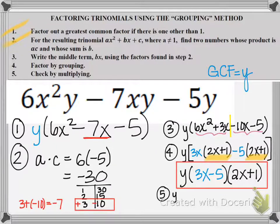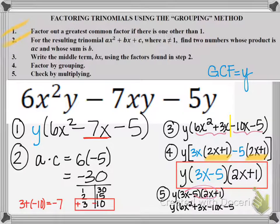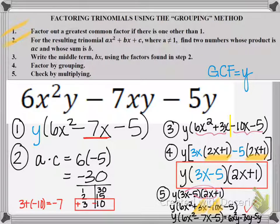But of course, we want to do the check. So when I check this, I'm going to first multiply the two binomials. So I'm going to leave y on the outside. And I'm going to get 6x squared plus 3x minus 10x minus 5. Then I'm going to combine like terms in the middle. And I still have y on the outside, but now I have 6x squared minus 7x minus 5. And then my final step is to distribute that GCF y. And I get 6x squared y minus 7xy minus 5y. And then I know that that matches my original problem.